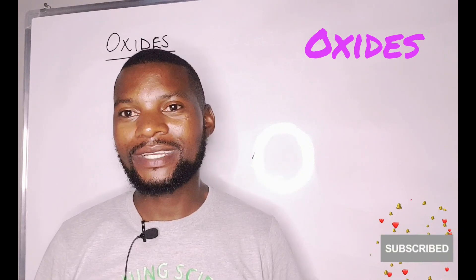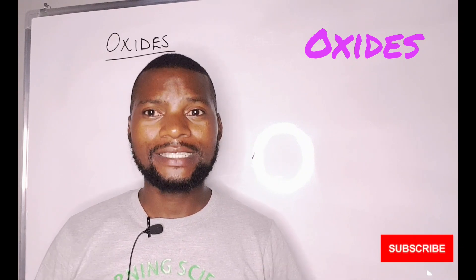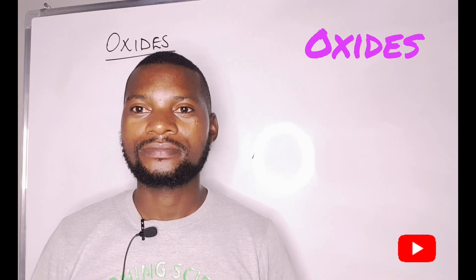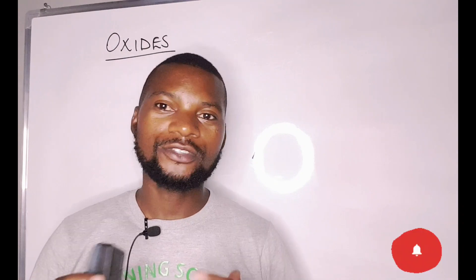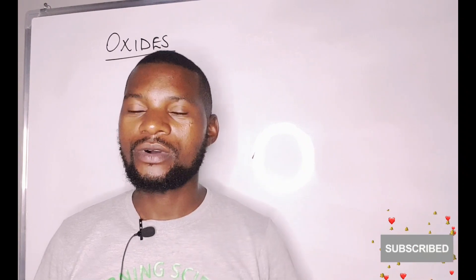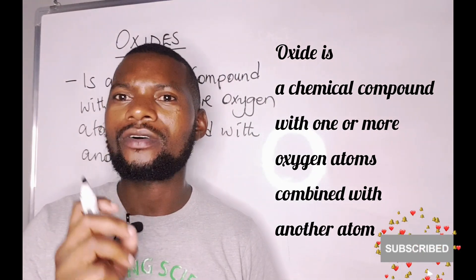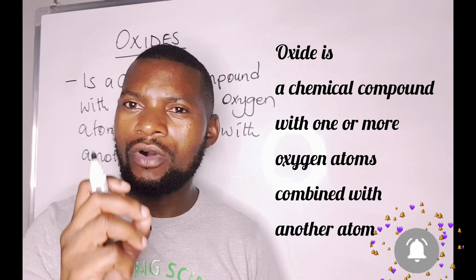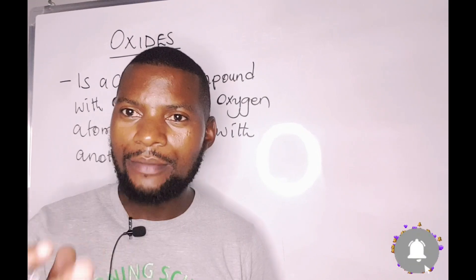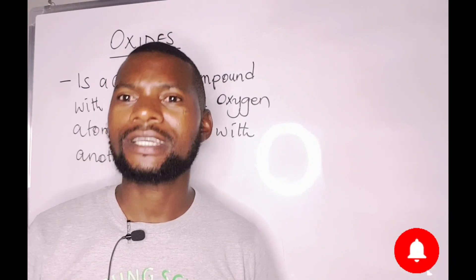Hi guys and welcome to Learning Science the Easy Way. It is your favorite teacher, Majin. In this lesson I am going to talk about oxides. An oxide is a chemical compound with one or more oxygen atoms combined with another atom. For example, carbon dioxide, carbon monoxide, dihydrogen oxide, lithium oxide, calcium oxide.